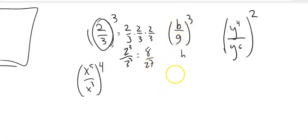B to the 3rd over 9 to the 3rd? That should be B to the 3rd over 9 to the 3rd, and we could resolve that on our calculator.